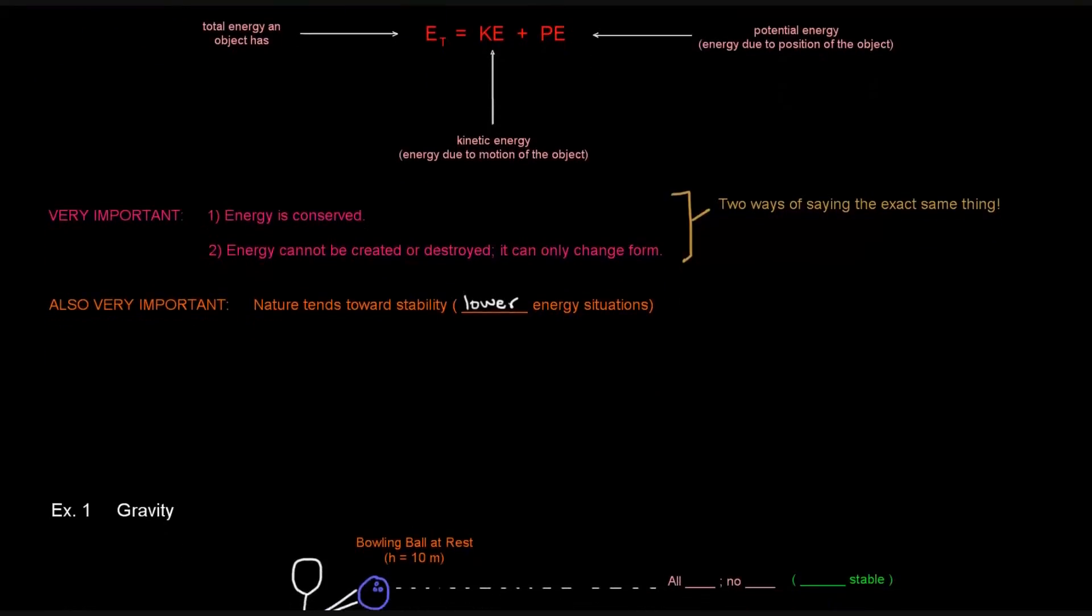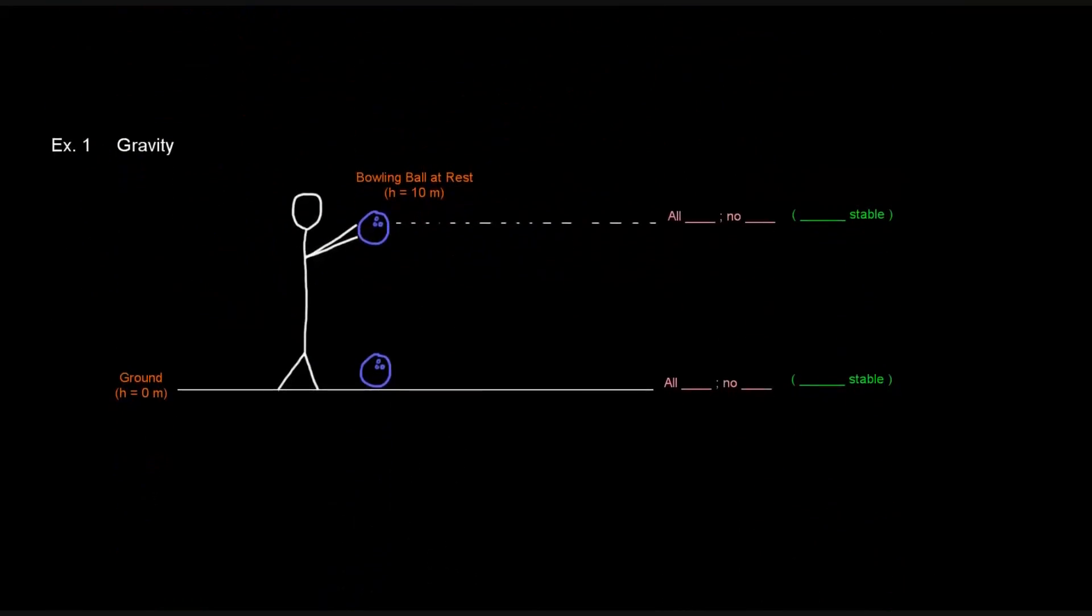So let's think about some situations which involve kinetic energy and potential energy. First example involves gravity. So let's imagine this guy is holding a bowling ball 10 meters in the air because he's gigantic and super tall. So he's holding a bowling ball at rest. At rest means no movement. No movement, which means there's no energy due to motion. So that means there's no kinetic energy at this point up here at this height.